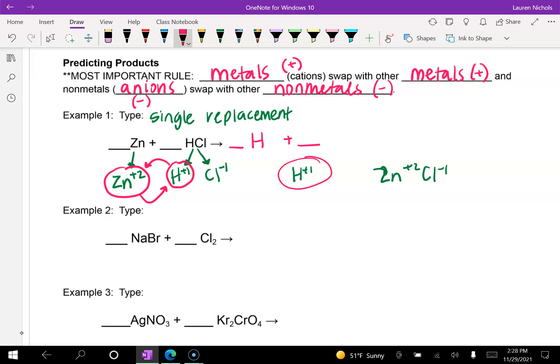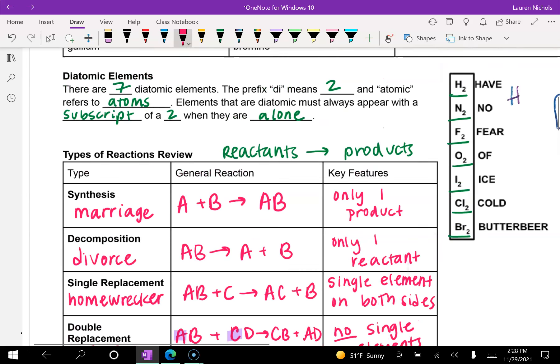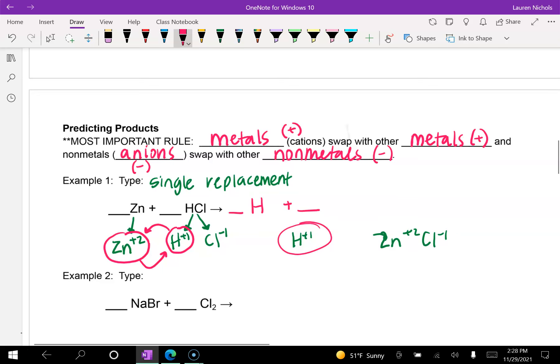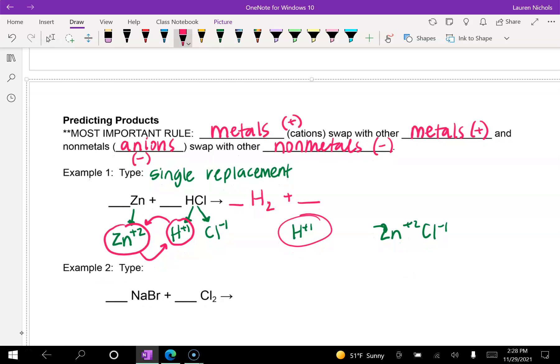Hydrogen is all by itself. And it's also on our list of diatomic elements. So that means that we need to put it as H2. And then ZnCl. Chlorine, we need another one to balance out the positive two charge. So it should be ZnCl2 with a subscript two.